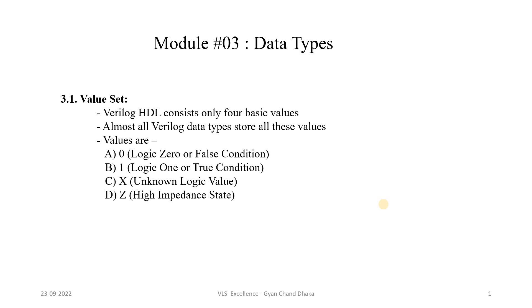Welcome to the third module of the Verilog HDL crash course. In this module we are going to cover Verilog HDL data types and their associated concepts with proper examples. Almost all data types in Verilog HDL store values in one of four formats: 0, 1, x (unknown logic value), or z (high impedance value).